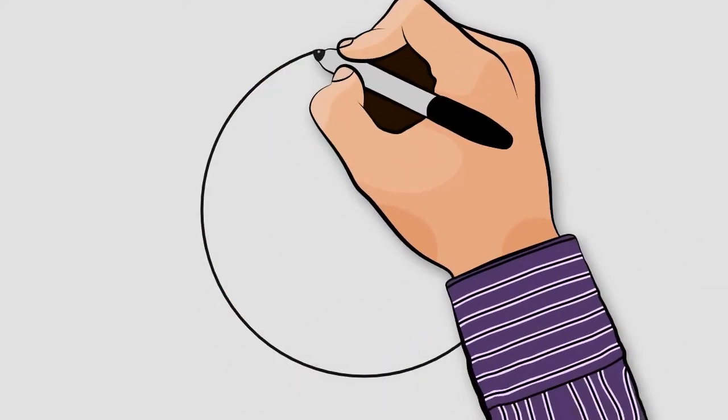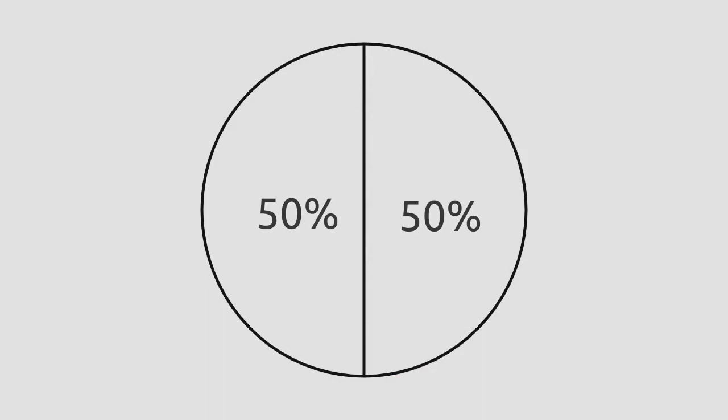Let's try another example. Suppose your teacher asks you to paint 50% of the following circle orange. We know that this entire circle represents 100%. What you can do is divide the circle into 2 equal parts — each part represents 50%, because 100% divided by 2 equal parts gives us 50% for each part. Now, if you want to paint 50% of the circle orange, you only have to paint 1 part of 2. Let's paint the one on the left.